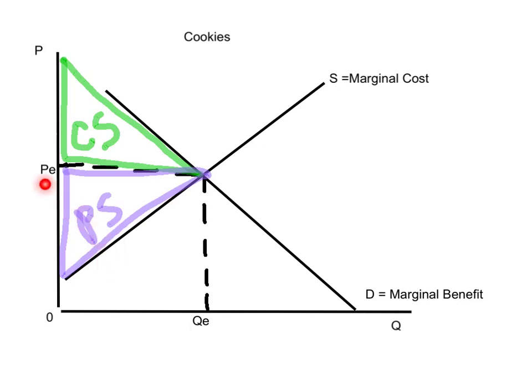In other words, at PE and QE here, marginal cost is equal to marginal benefit.